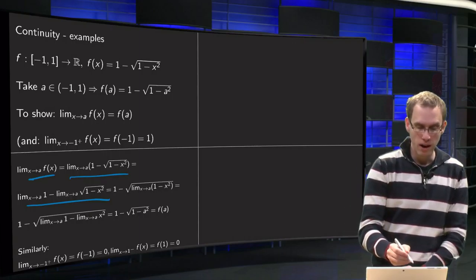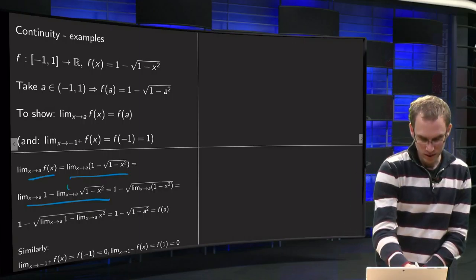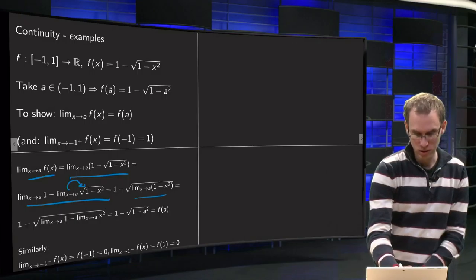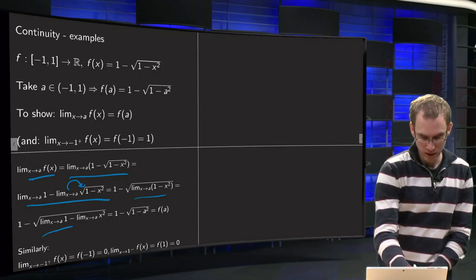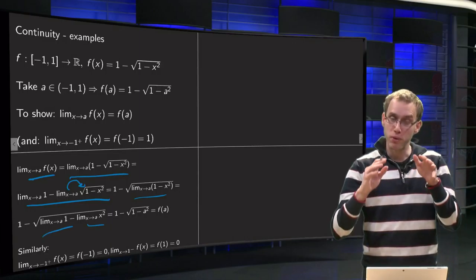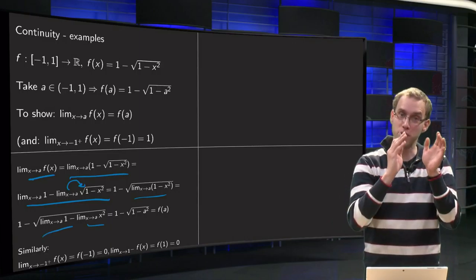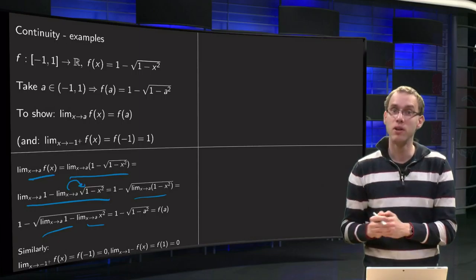Then we can use our sum rule over here because we are dealing with limits. Then the first limit is trivial: x to a of the function 1 is just 1. We can take our limit inside using the root law.